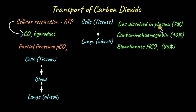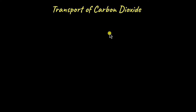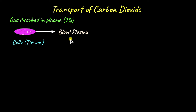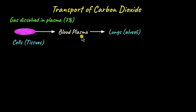First, let's look at how carbon dioxide is dissolved in plasma and transported to the lungs. As carbon dioxide is produced in the cells, it begins to accumulate, increasing the partial pressure within the cells. At a certain partial pressure, carbon dioxide diffuses out of the cells into the blood plasma where the partial pressure is much less, and it dissolves in the blood plasma. The carbon dioxide dissolved in blood plasma is then transported to the lungs, where the partial pressure gradient causes it to diffuse into the lungs and be exhaled out.